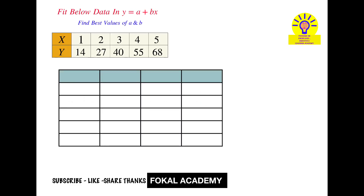In the table, take x values and y values, next xy values, and next x-square values. These values are needed to get the a and b values. First, substitute all x values: 1, 2, 3, 4, 5. The corresponding y values are 14, 27, 40, 55, 68.